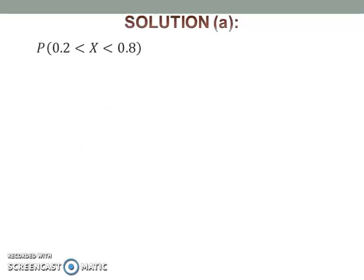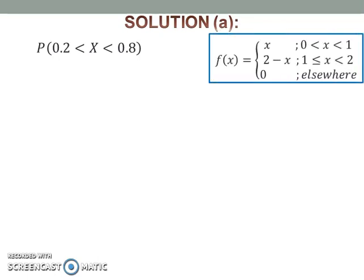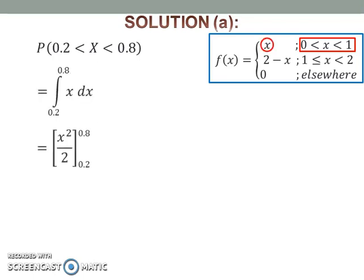To find the probability of x between 0.2 and 0.8, first look at the function. From the function, it can be seen that 0.2 and 0.8 lie in this interval. Thus, integrate x with respect to x from 0.2 to 0.8. Then substitute 0.2 and 0.8 into x and calculate the probability.